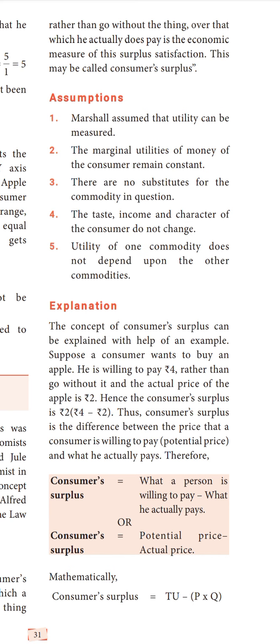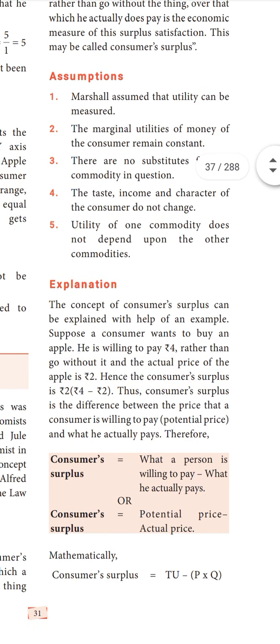Fourth assumption: the tax income of the consumer doesn't change — the consumer's income remains constant throughout the purchase decision.